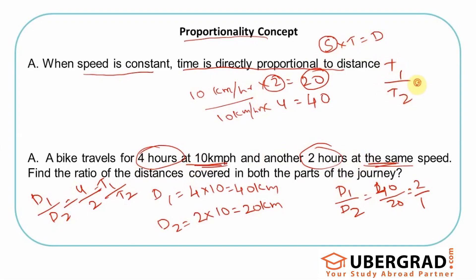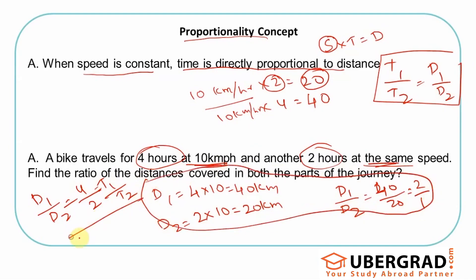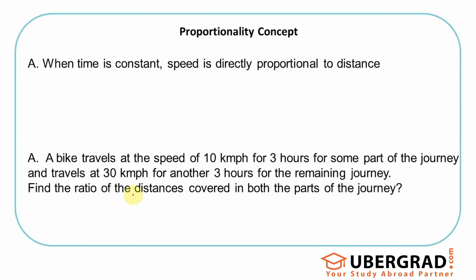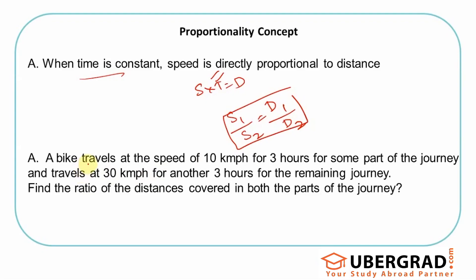Because speed is constant, time one by time two equals distance one by distance two. This saves effort — you can write the answer straight away. This is fundamentally the same thing, just skipping a couple of steps. Similarly, if time is constant in the equation s × t = d, then the ratio of speeds s1 by s2 equals the ratio of distances covered. For example, a bike travels at 10 kilometers per hour for three hours, then at 30 kilometers per hour for another three hours.